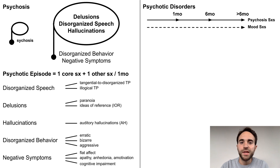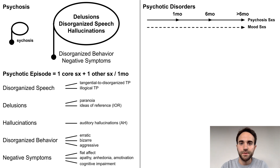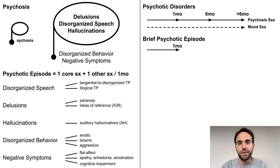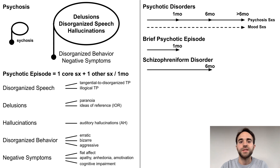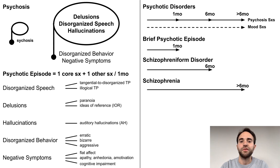In the visuals that follow, a solid line will represent psychotic symptoms and a dashed line will represent mood symptoms. A brief psychotic episode is when psychosis lasts for less than one month. Schizophreniform disorder is when psychosis lasts for one to six months, and schizophrenia is when psychosis lasts for longer than six months.